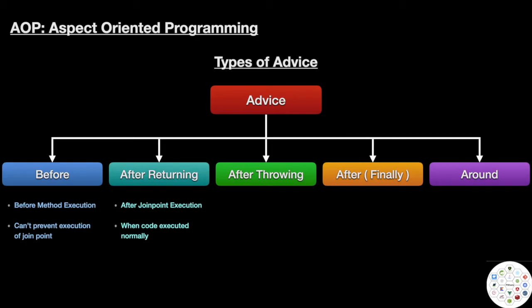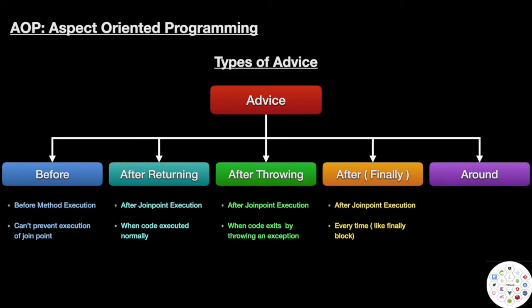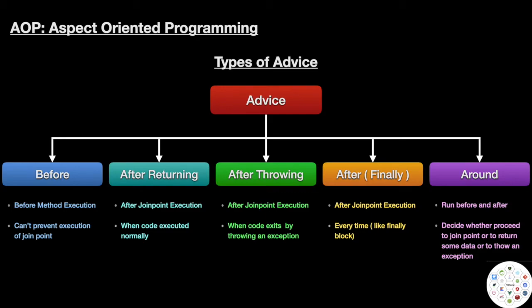The third type is 'after throwing' — these advices are called after execution of the joint point if any error is thrown. The fourth is 'after finally' — similar to a finally block in exception handling, this is called every time after the joint point executes. The fifth is 'around' — these advices are called before and after, and we can decide whether to proceed to the joint point or not, and can return data or throw an exception. This makes 'around' the most powerful advice type.